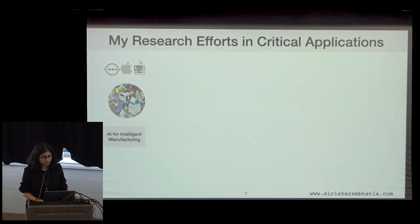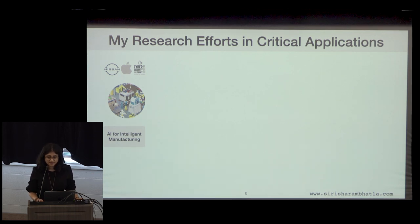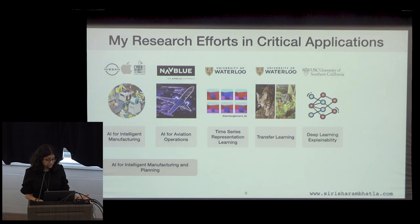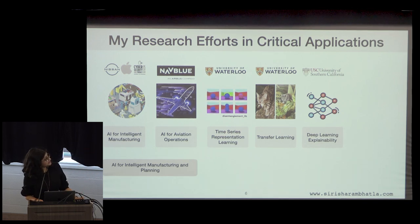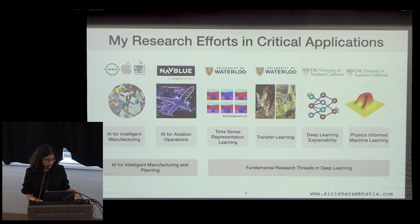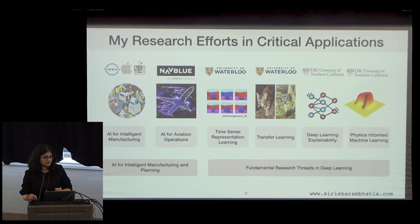In my research at Waterloo, I look at AI for intelligent manufacturing — with various companies and with CPI — and AI for aviation operations, to make those operations more robust and reliable. I also work on time series representation learning and transfer learning, addressing how to maintain reliable performance as data changes over time. Additionally, I work on deep learning explainability and domain priors such as physics priors in climate applications, where we can inject established knowledge — like partial differential equations — into models to build trust with experts.